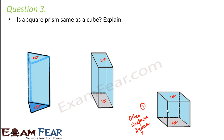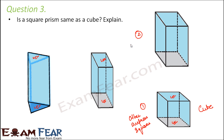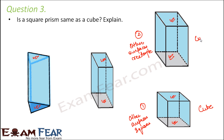If the other surfaces are squares, then we get a cube. But there is another option: the other surfaces could be rectangles. So it is also possible that the top and bottom surfaces are squares but all other four surfaces are rectangles — in that case we get a cuboid. So a square prism can be either a cube or a cuboid, and it is not necessarily always a cube.